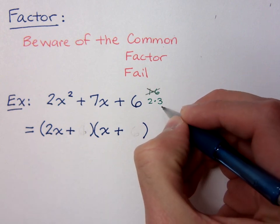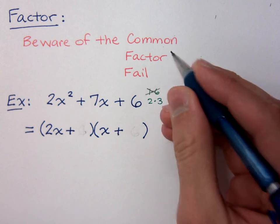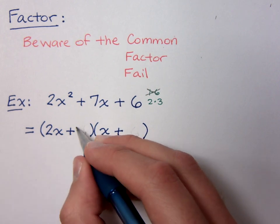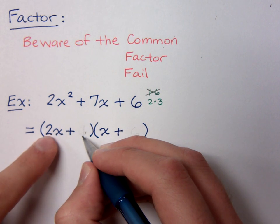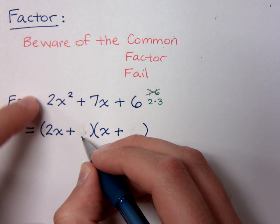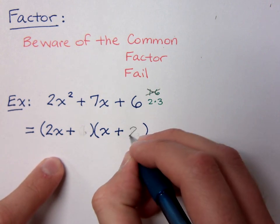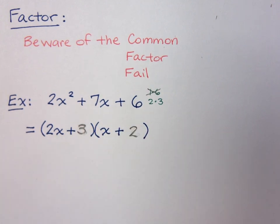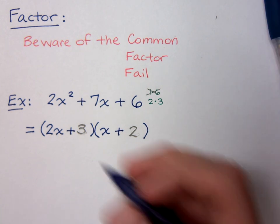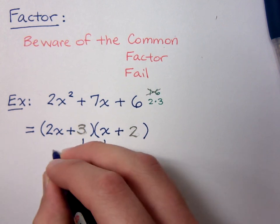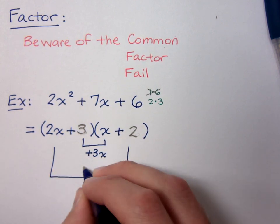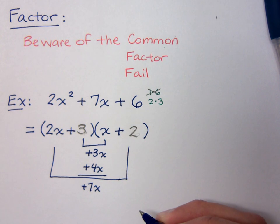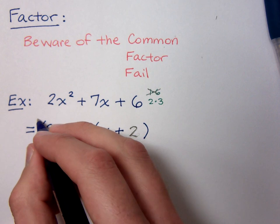Now I've got the 2 and the 3. Considering the common factor fail, the 2 cannot go next to the 2x because they would have a common factor. So I need to put the 2 over here and the 3 here. When I check on the inside, I have a plus 3x, and on the outside I have a plus 4x. So altogether, I get my plus 7x — that's what I was supposed to have. We can save ourselves a lot of time if we watch out for those common factors.